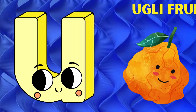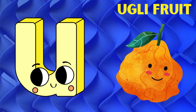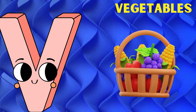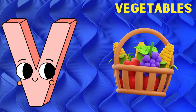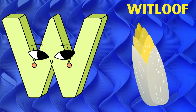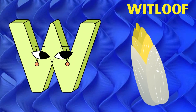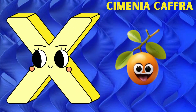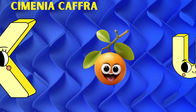U is for ugly fruit, ugly fruit. V is for vegetables, vegetables. W is for whitloaf, whitloaf. X is for zymenia caff, zymenia caff.